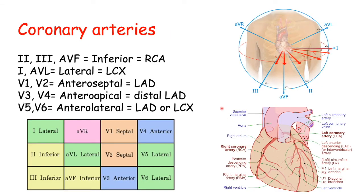If we know the region of the heart that is suffering a heart attack — suffering ischemic damage — we are likely to know which artery is affected. Looking at the inferior border of the heart, shown by leads 2, 3, and AVF, we can see it is mainly supplied by the right coronary artery. So if we have a heart attack at these leads, the artery most likely affected is the right coronary artery — there may be a blockage in that artery.